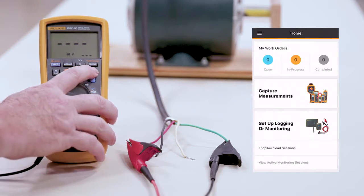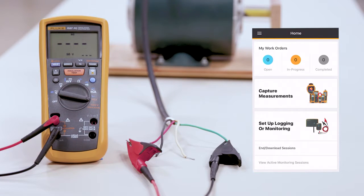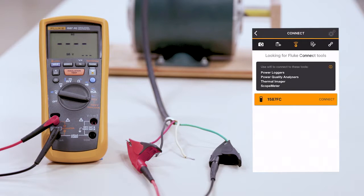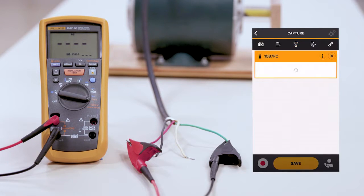In the corner, we'll hit the Fluke Connect button. We're going to go to our phone and hit Capture Measurements. As you can see, the 1587 FC is now connected. We'll connect to that meter.